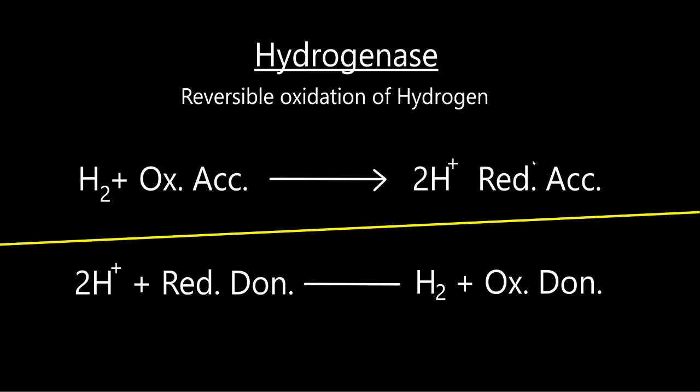Now it is reduced because it just gained electrons, but it is still an acceptor for this reaction because it accepted these electrons. Then we have the reduced donor. That means it has spare electrons that it wants to give away.